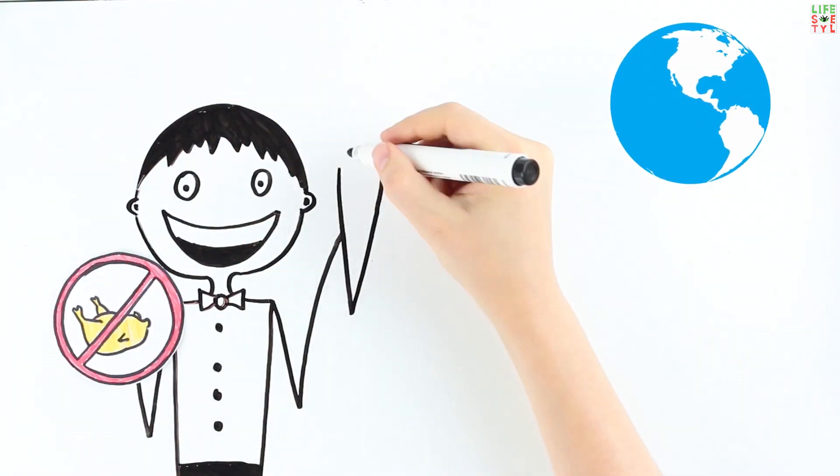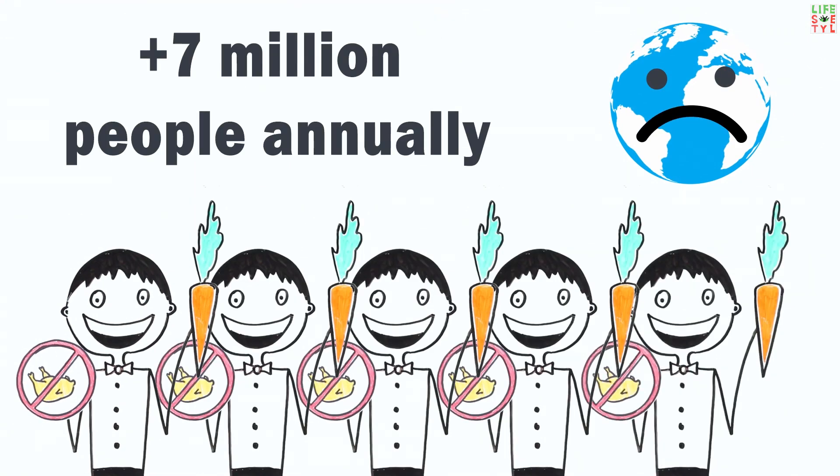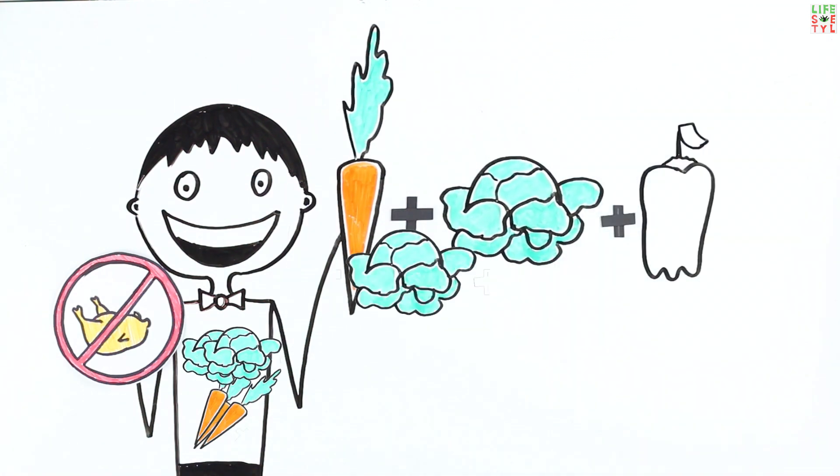This will reduce the cost of medicine but lead to overpopulation of the planet. In addition, in order to go without meat without harm to health, it is necessary to replace it with products of equal nutritional value.